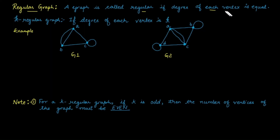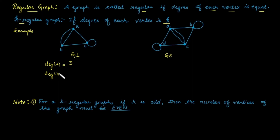Regular graph: a graph is called k-regular if the degree of each vertex is k. For example, in graph G1, the degree of vertex a is three, degree of vertex b is three, but the degree of vertex c is 1 + 1 + 2 (self-loop counted twice) = 4. Since the degree of each vertex is not the same, G1 is not a regular graph.